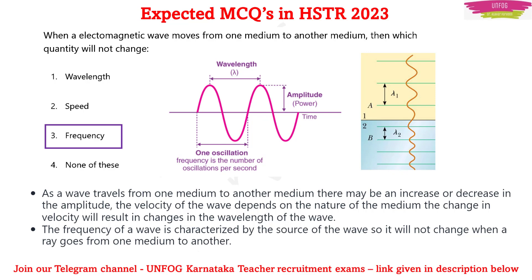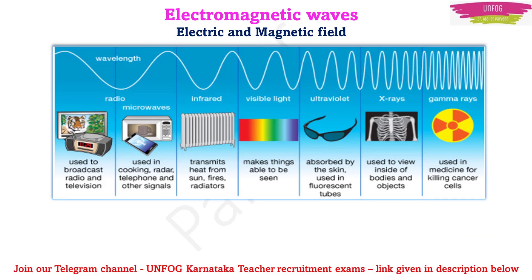Since frequency is inversely proportional to wavelength, when we have VIBGYOR of visible light — white light split into its colors — the wavelength increases from violet to red. Therefore, the frequency decreases from violet to red. In the electromagnetic spectrum overall, the wavelength is highest for radio waves and smallest for gamma rays.